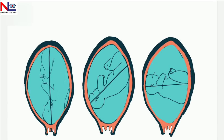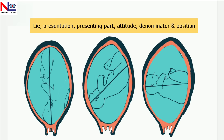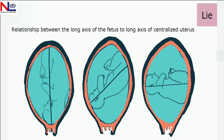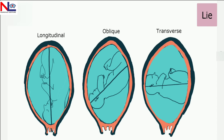Next I'll discuss the parameters showing the relationship between the mother and the fetus: lie, presentation, presenting part, attitude, denominator, and position. The lie is the relationship between the long axis of the fetus and the long axis of the uterus. There are three lies: longitudinal, oblique, and transverse. The commonest is the longitudinal lie, in which either the cephalic region (fetal skull) or the podalic region (buttocks) comes first.